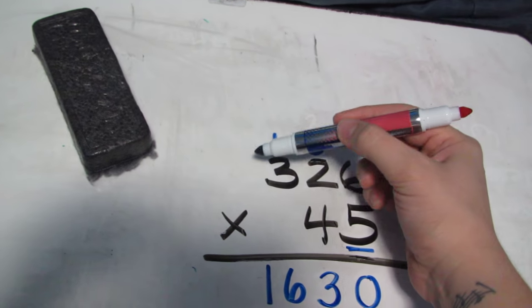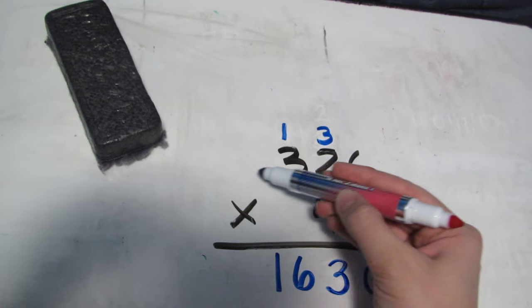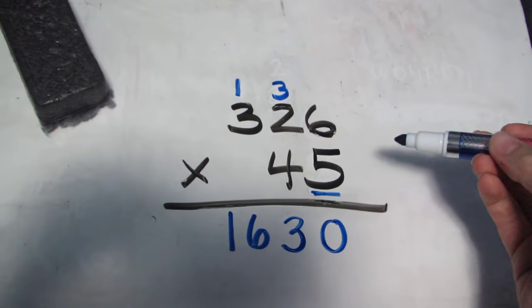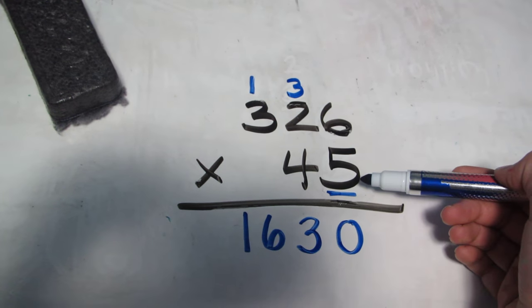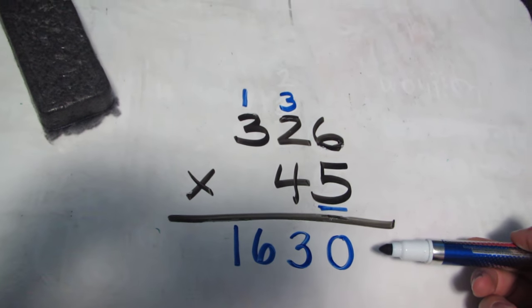And notice how this time I didn't need to put the little number up there because I'm finished working with the numbers on the top. And so I could just put it down at the bottom. So what I just did was 326 times 5 equals 1,630. That's where that number comes from.